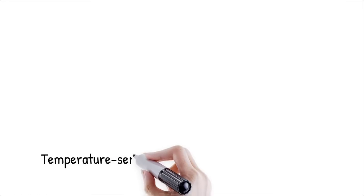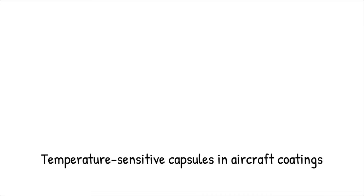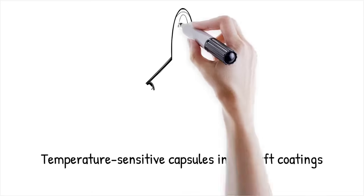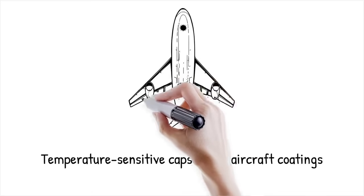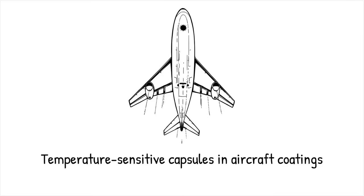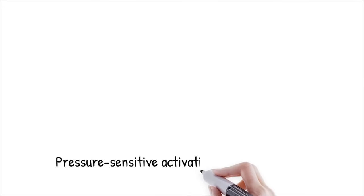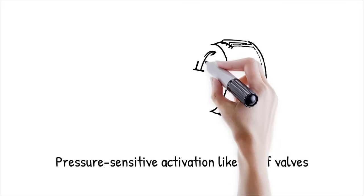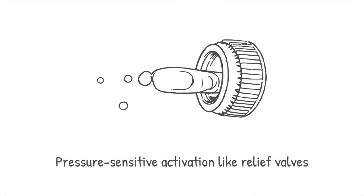In aircraft coatings, microcapsules with temperature-sensitive shells release anti-corrosive agents when exposed to extreme thermal fluctuations, preventing structural degradation. This functions like a pressure-sensitive relief valve, activating only when a threshold force is exceeded.